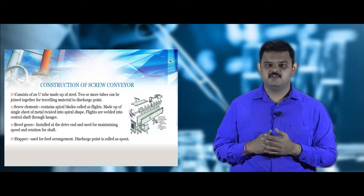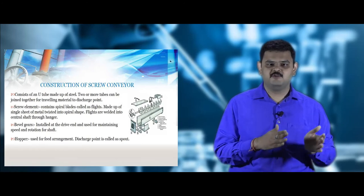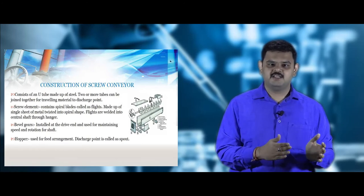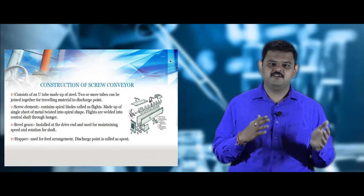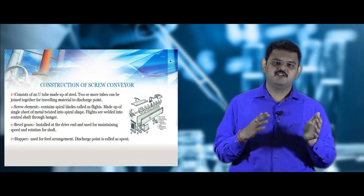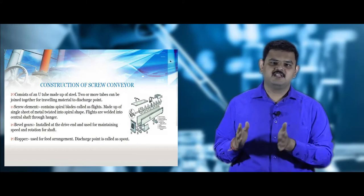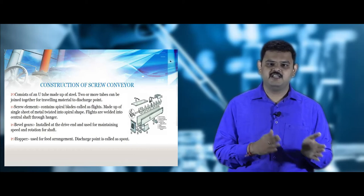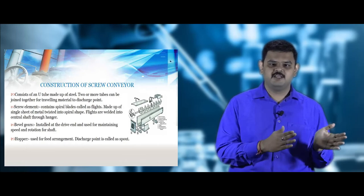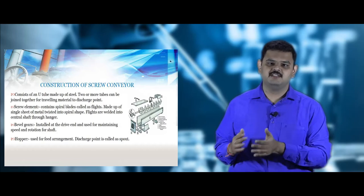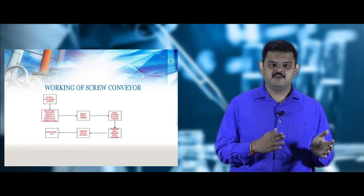The screw conveyor consists of parts such as a U-tube covering, bevel gears, shaft, and helical coils. The helical coils are rotated by the shaft at regulated speed using bevel gears. The U-tube has a jacket providing provision for either heating or cooling of the feed material. The feed material is dropped in by a feed hopper and collected at the discharge end.